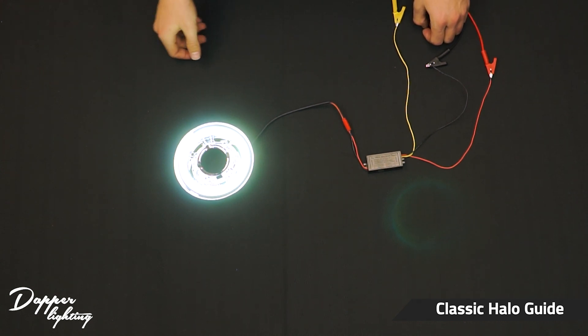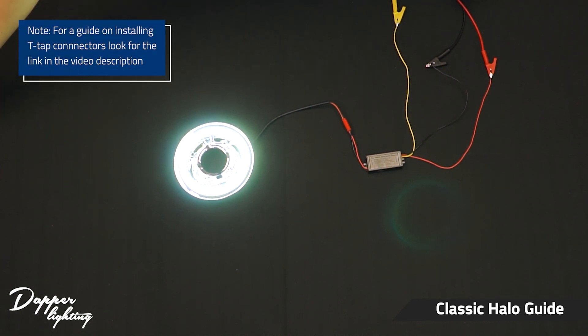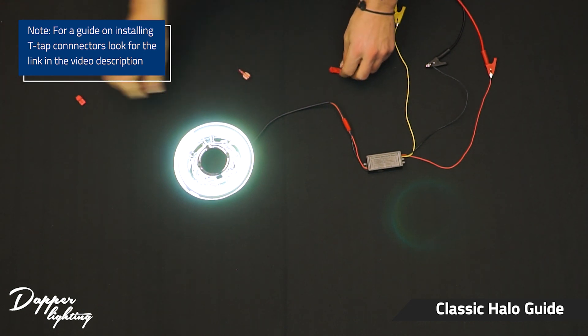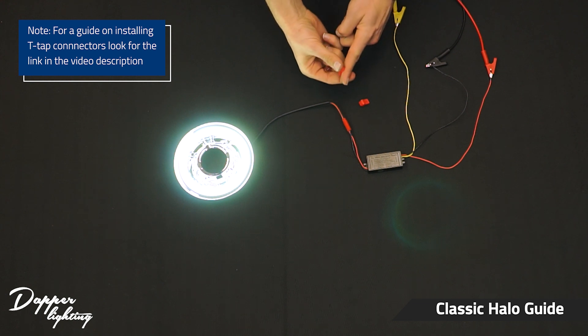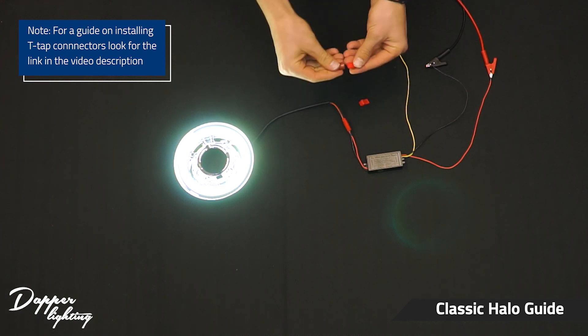And all of our kits come with the necessary connectors so you can use those and we'll show you what that looks like. This is a little t-tap connector and basically you're going to crimp that onto the wire that you want to tap into and then you plug this connector right into that.